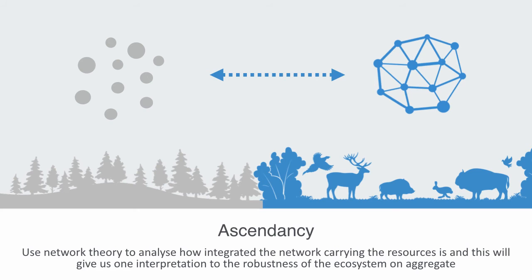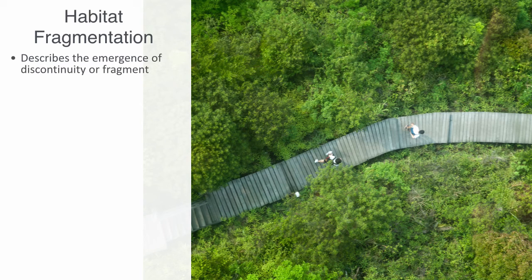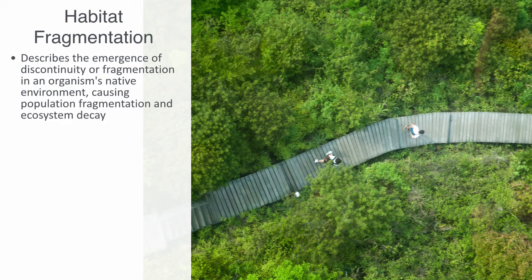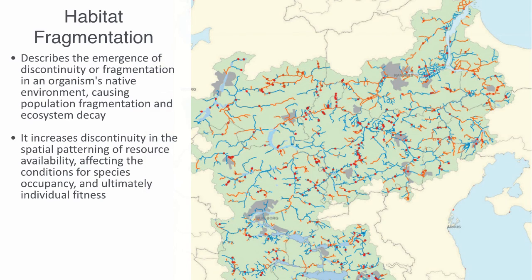On aggregate, this network integrity is traditionally understood in terms of habitat fragmentation. Habitat fragmentation describes the emergence of discontinuities or fragmentations in an organism's native environment, causing population fragmentation and ecosystem decay. It is a process during which a large expanse of habitat is transformed into smaller patches isolated from each other by a different habitat type, affecting conditions for species occupancy and individual fitness. Fragmentation can arise via both natural and anthropogenic processes in terrestrial and aquatic systems.